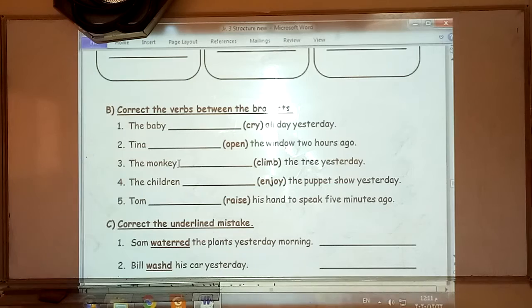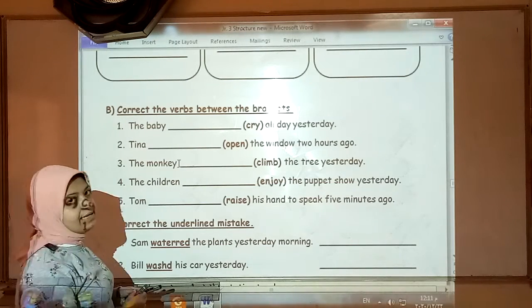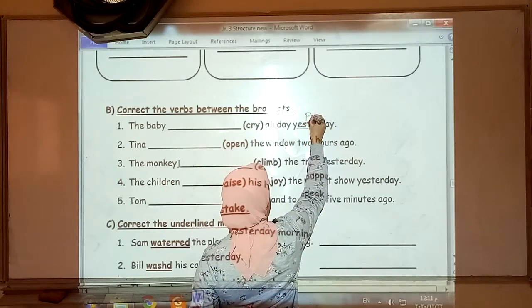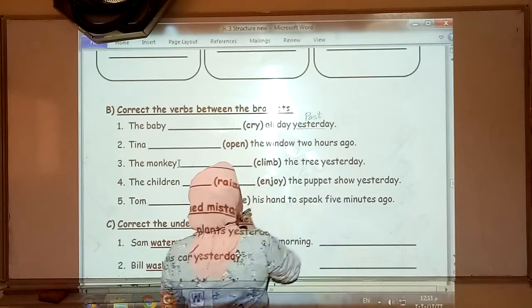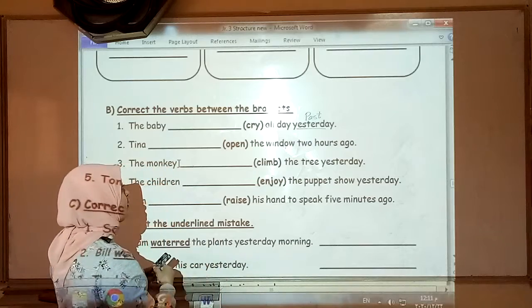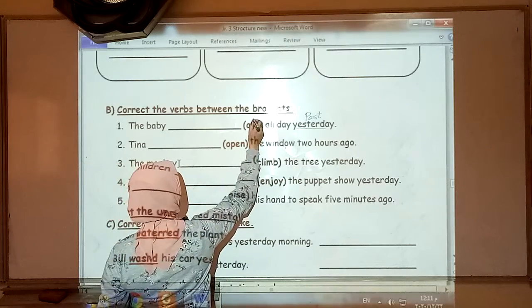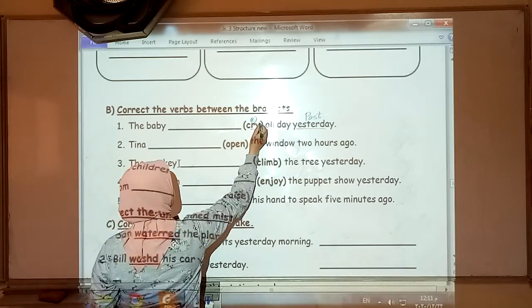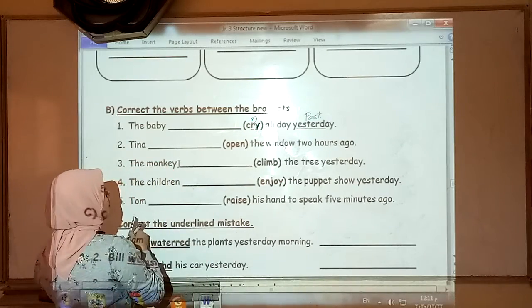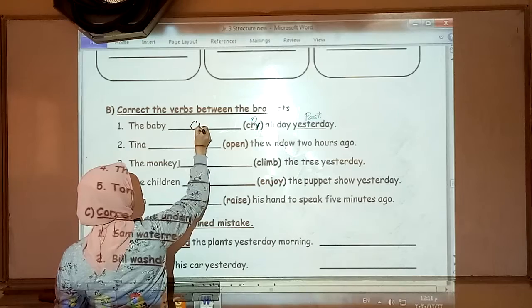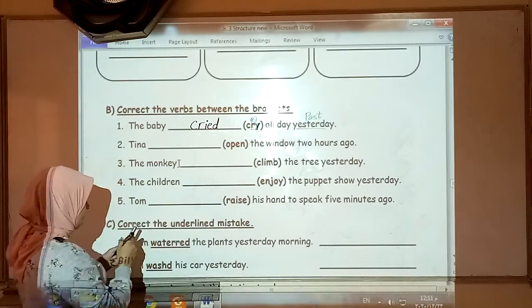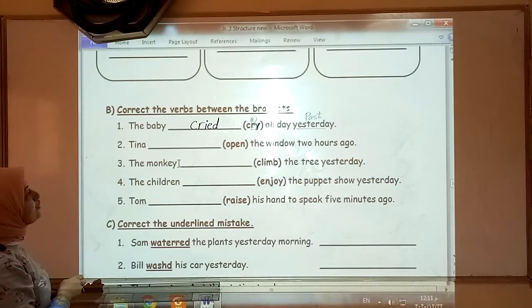Correct the verbs between the brackets. The baby cried all day yesterday. Yesterday, past. Cry. The verb here ends in Y and a consonant before it. Cross the Y. So, you will have IED, cried.